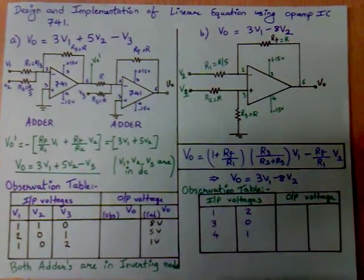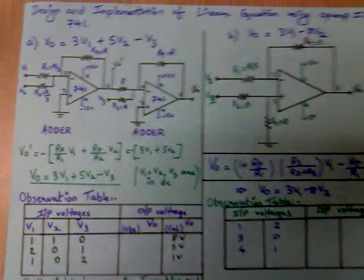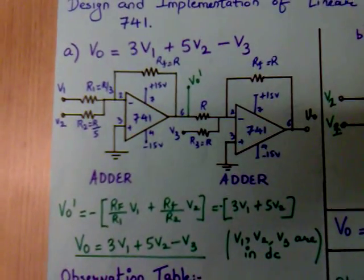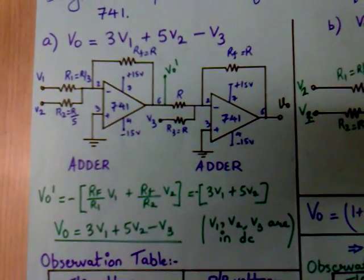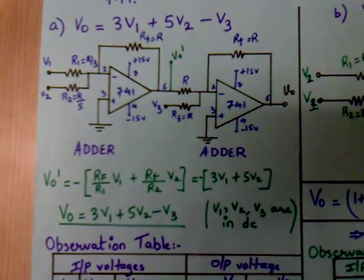Design and implementation of a linear equation using OPAMP 741. Let us consider if the equation given is 3V1 plus 5V2 minus V3.